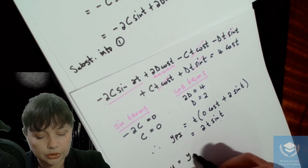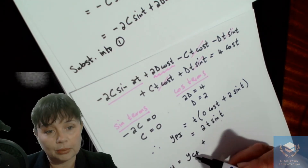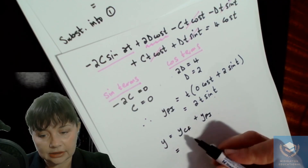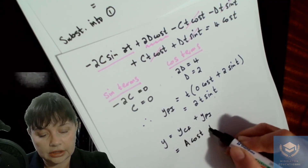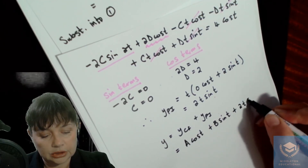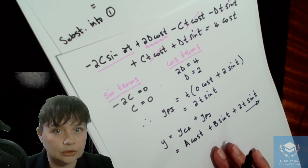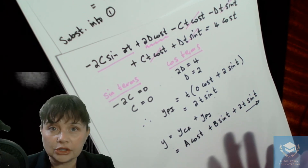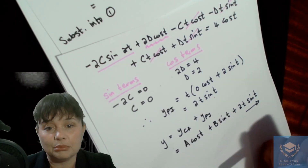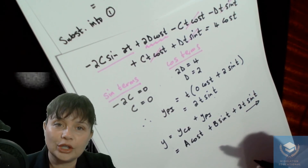Your overall solution, because you're working with a non-homogeneous differential equation, is the complementary function plus the particular integral: y = a cos t + b sin t + 2t sin t. That is your general solution. If you have initial conditions and need to find the particular solution, you would then find the values of a and b. I hope that's understandable. I'll see you next time.